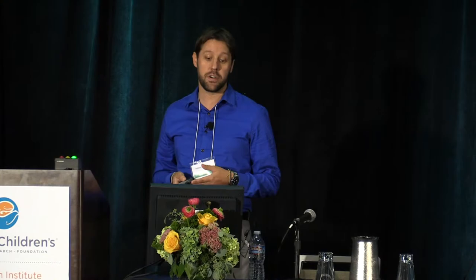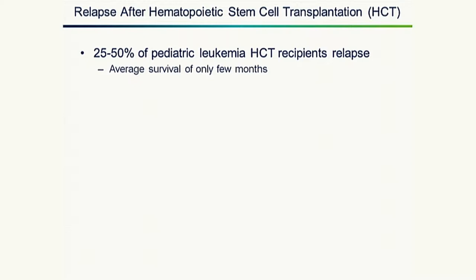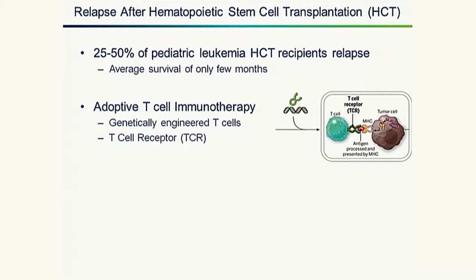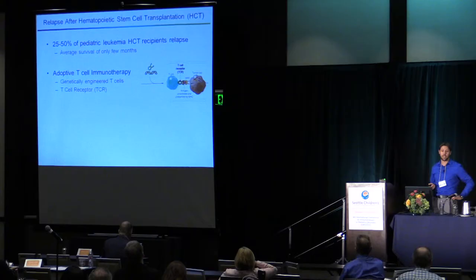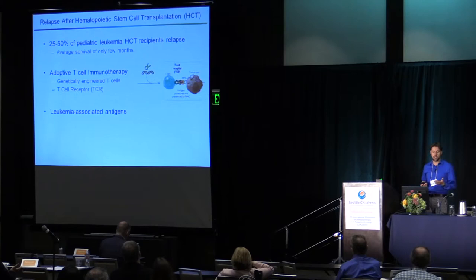Many children with high-risk leukemia are cured by hematopoietic stem cell transplantation. However, some will relapse, and for those that relapse, the average survival is only a few months. We believe that we can treat those children using adoptive T-cell immunotherapy, genetically modifying T-cells to introduce a T-cell receptor that targets leukemia-associated antigens.